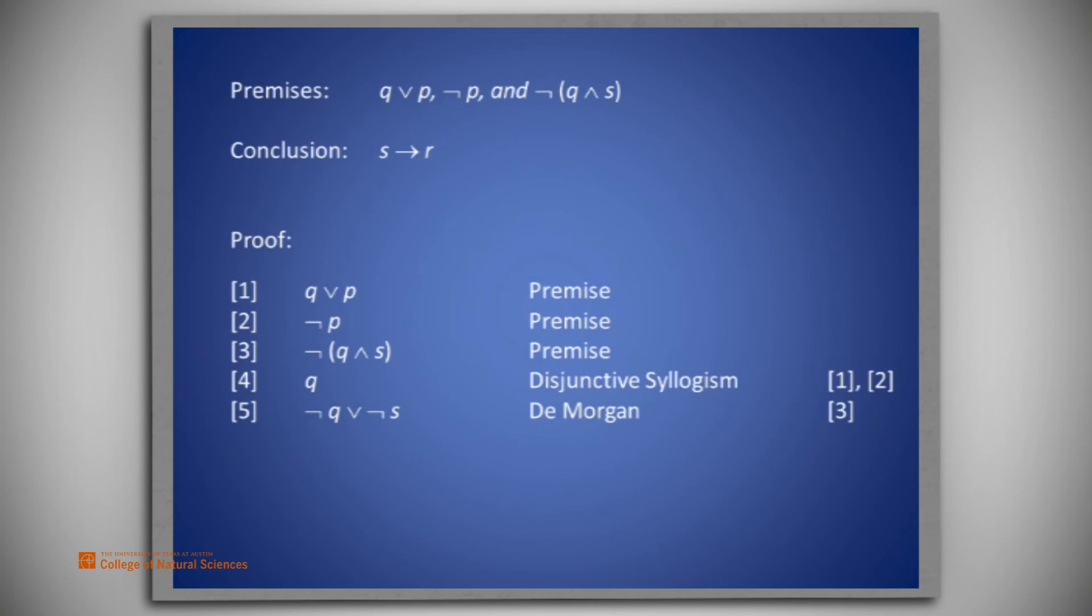Applying the De Morgan equivalence rule to line 3, we rewrite it in the form not Q or not S.